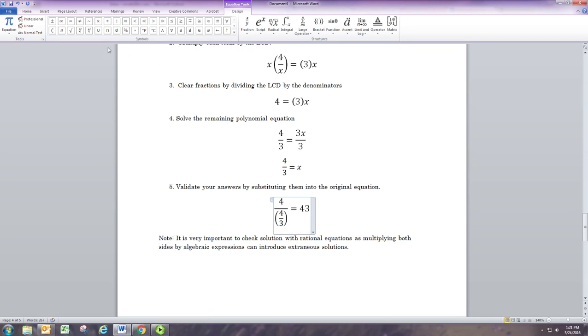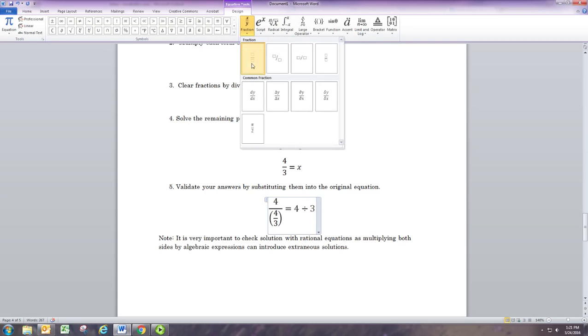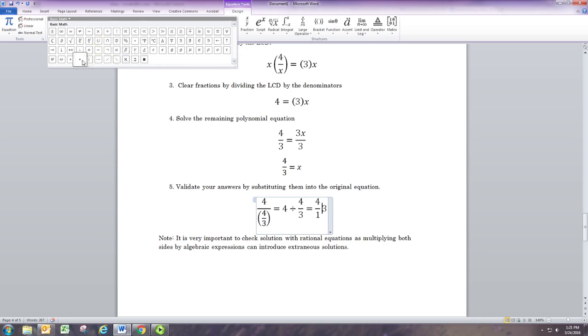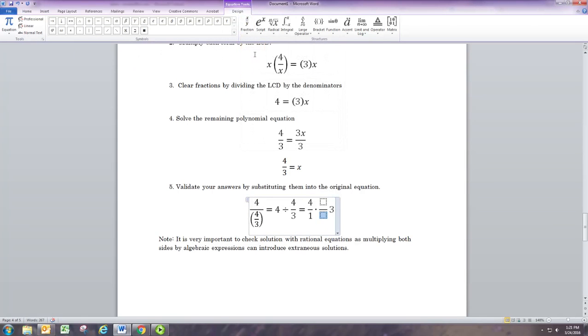We want to see if that equals 3. So this is really 4 divided by 4 thirds, which you could think of as 4 over 1 times 3 fourths. When you divide by a fraction, you multiply by the reciprocal, so dividing by 4 thirds is the same as multiplying by 3 fourths. You can get 12 over 4, or just cancel the 4s, either way you should get 3, and that's what we thought it would be. So 4 thirds is in fact the solution.